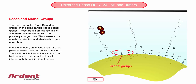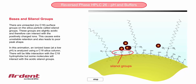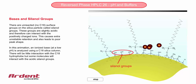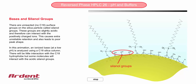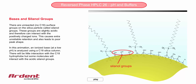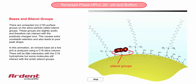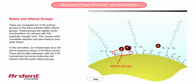As can be seen, this can slow down the progress of some of the molecules as they interact more with the silanol groups, and these slowed down molecules will elute slightly later from the column, resulting in a tailing peak.